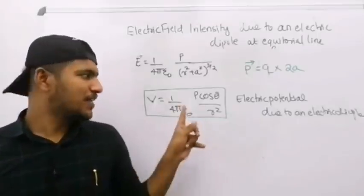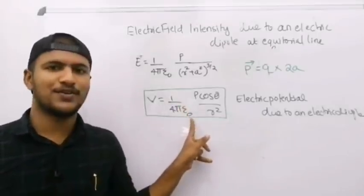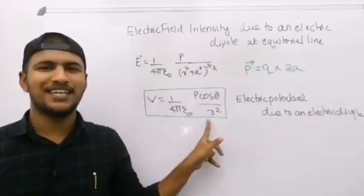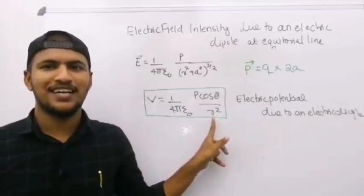V is equal to 1 by 4 pi epsilon 0, P cosθ by r square, is equal to Vr.